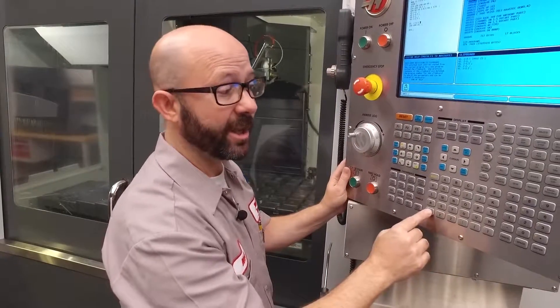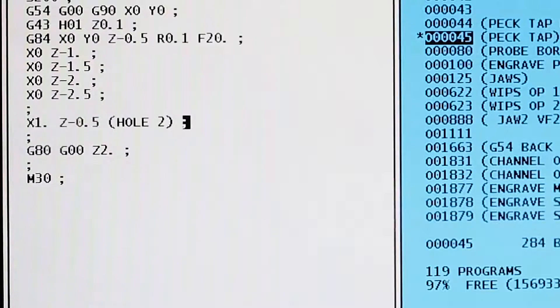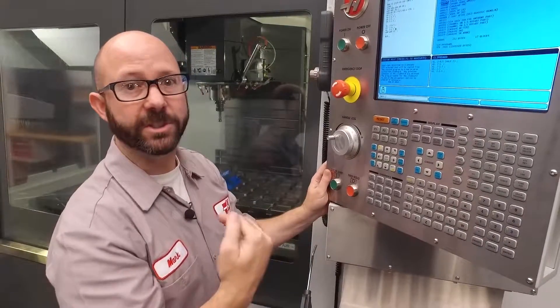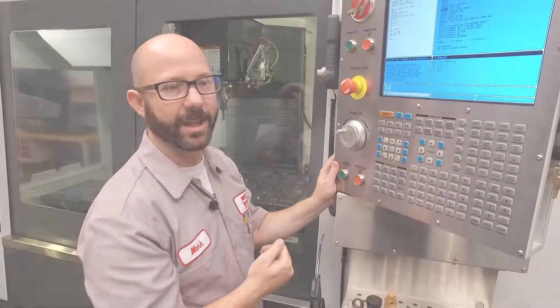To peck tap, I'm gonna enter X one inch, Z minus one. Then, X one inch, Z minus 1.5. We'll continue this in half inch increments until we reach that Z minus 2.5 depth.